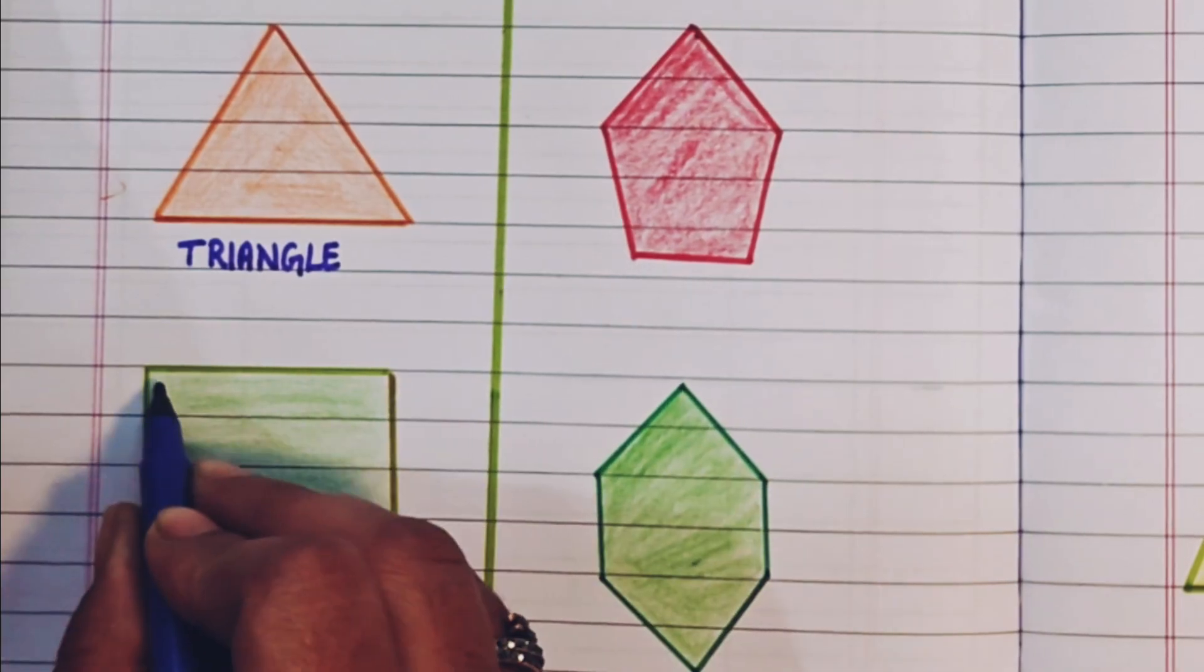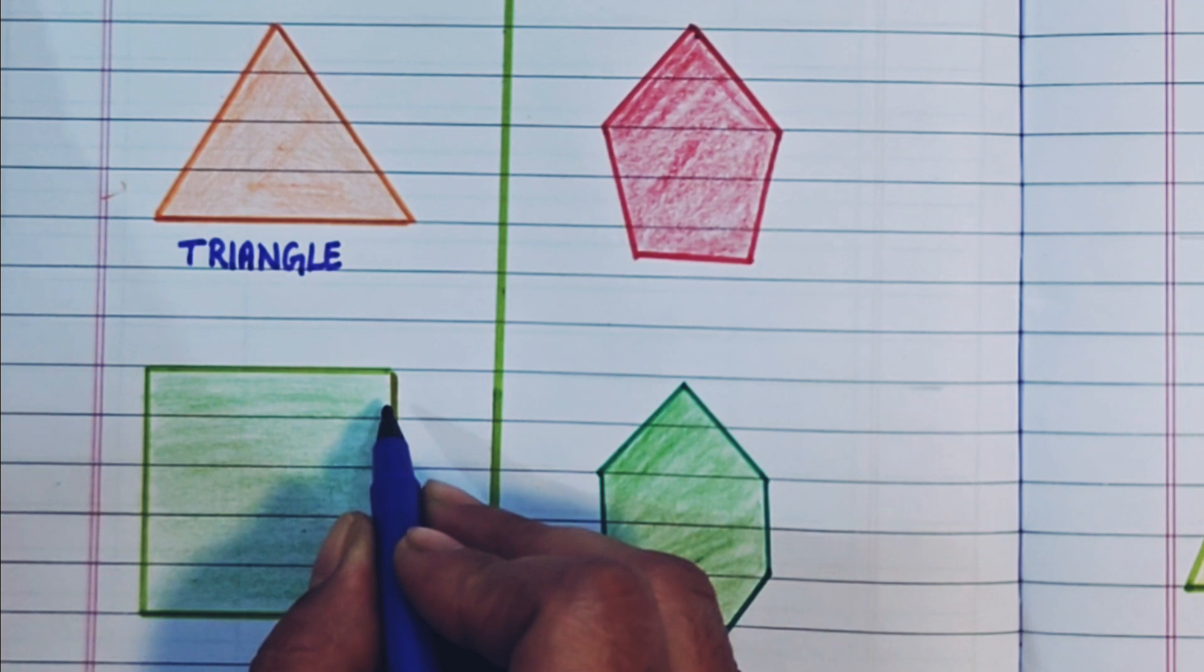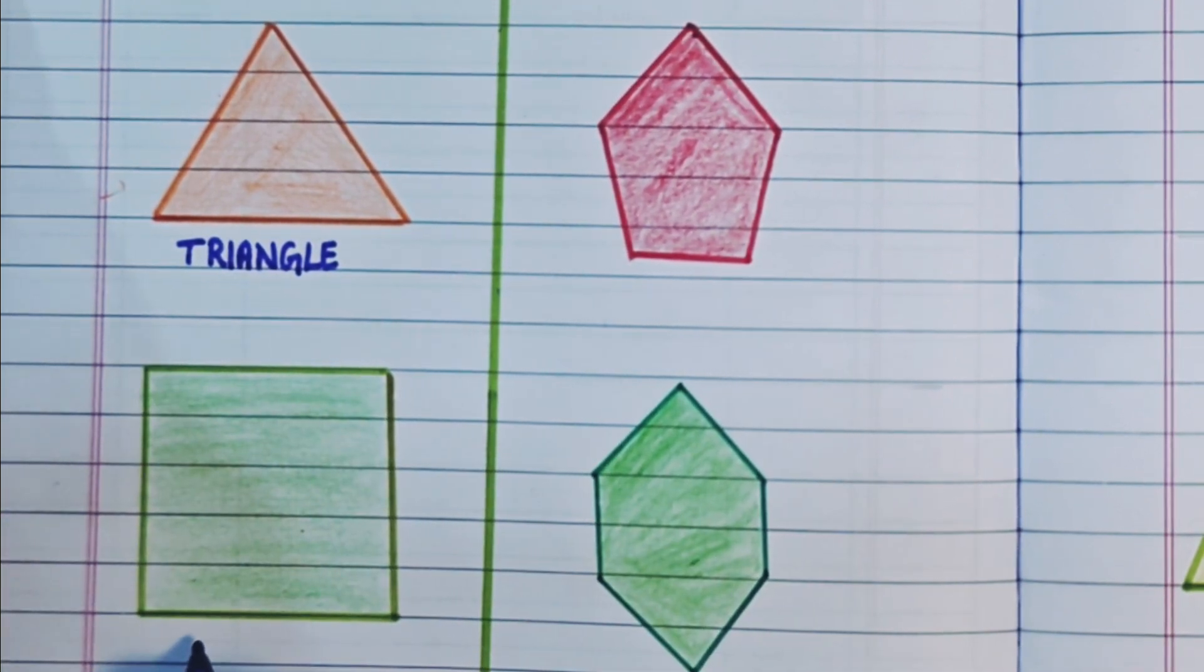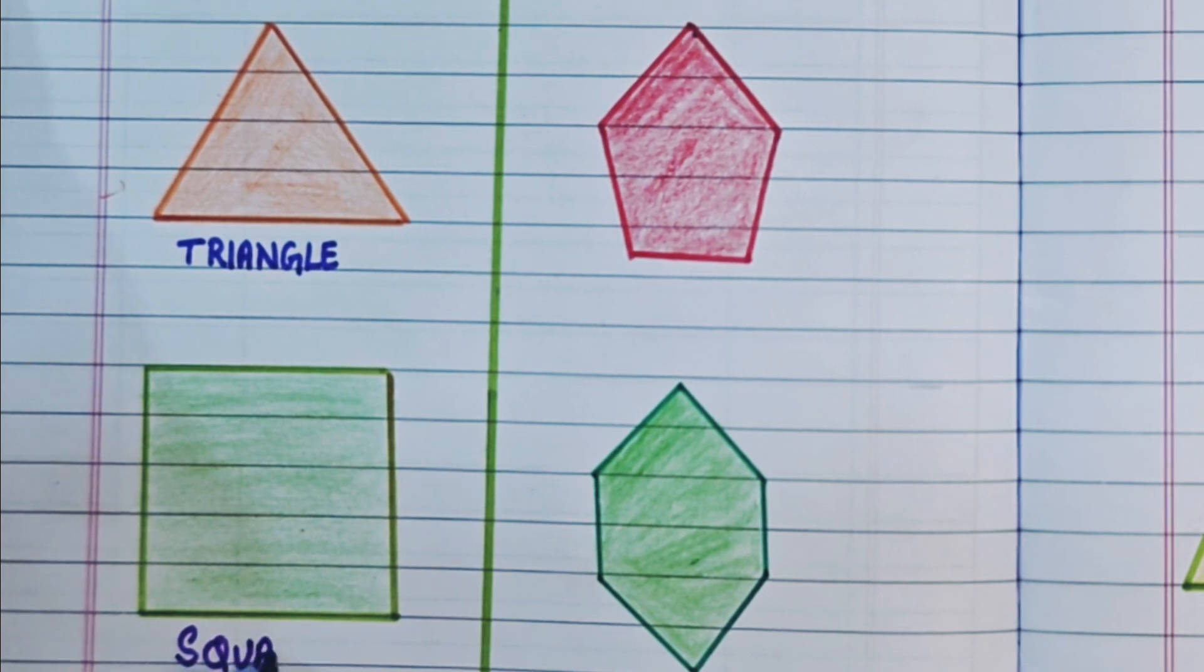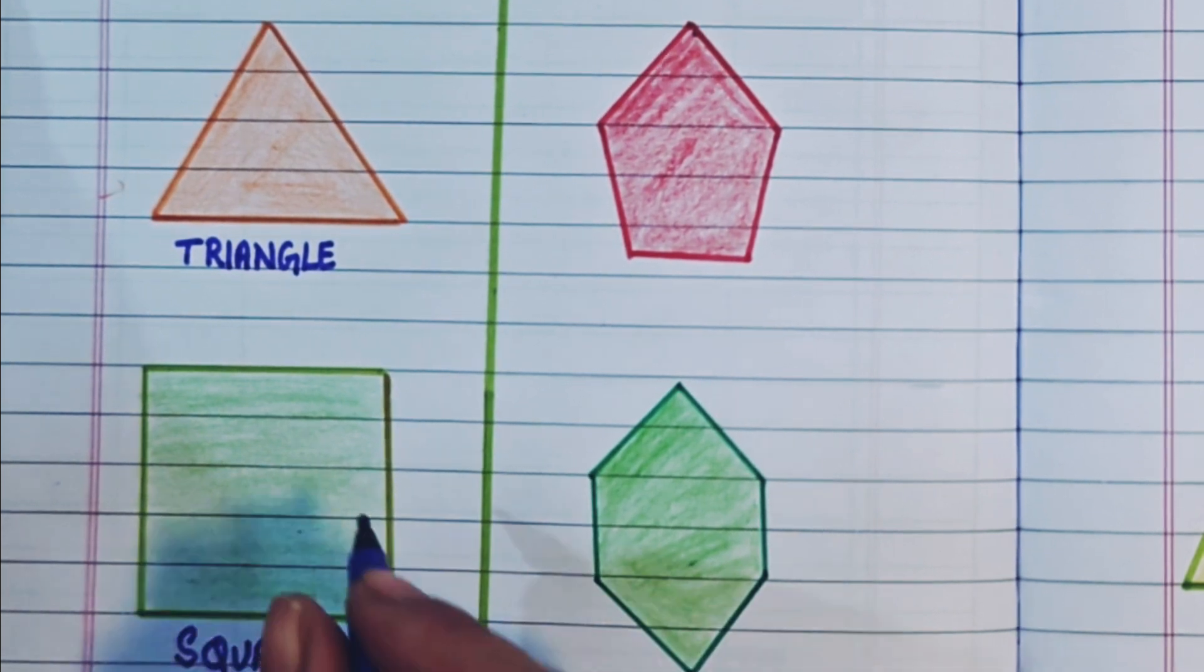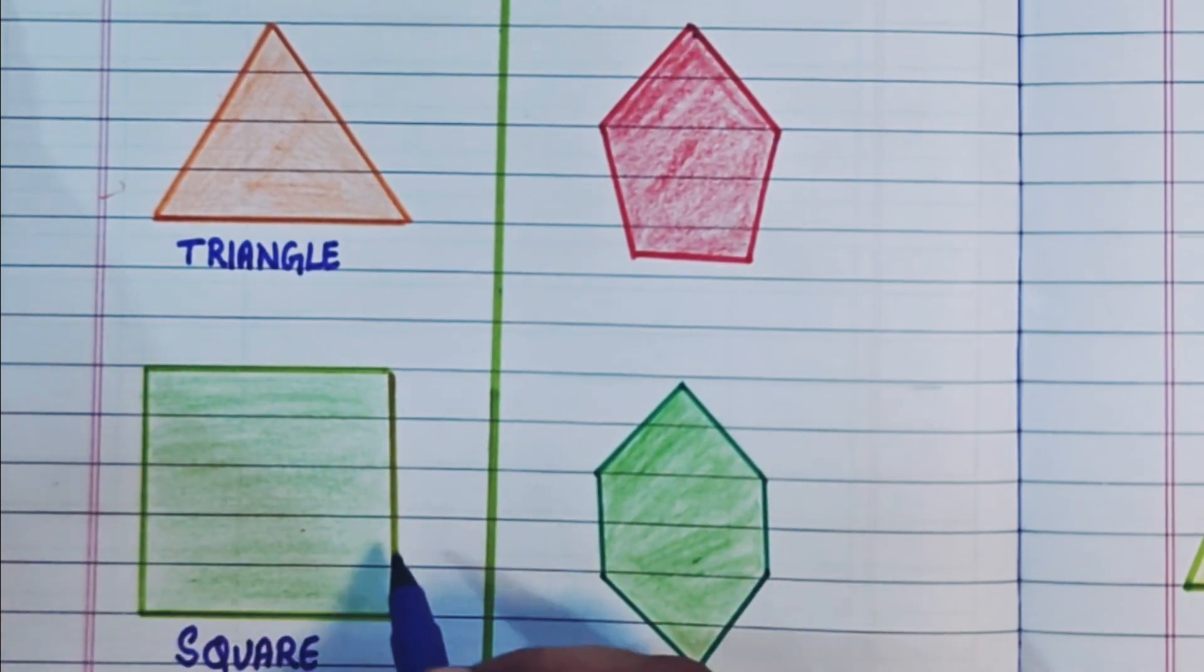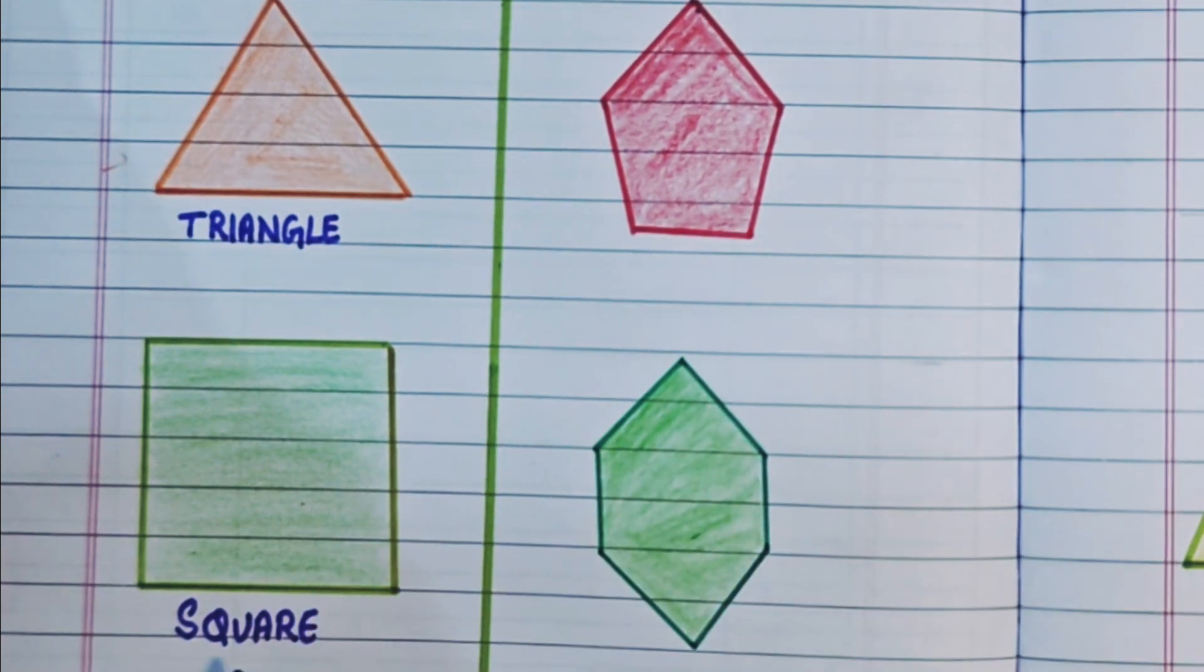Now next here we have 4 sides, and all the 4 sides are equal, and it has 4 corners. This is a square. S-Q-U-A-R-E. Square. It has 4 sides and 4 corners, and all the 4 sides are equal.